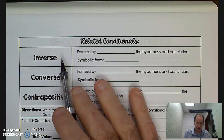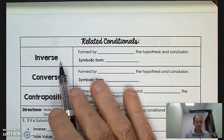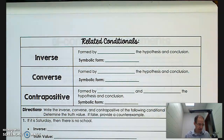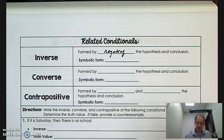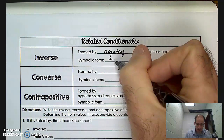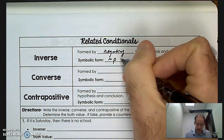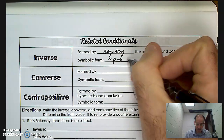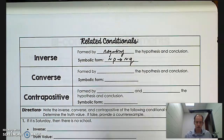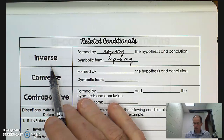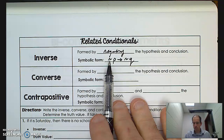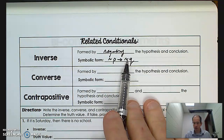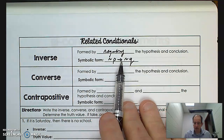One of them is called the inverse. The inverse is formed by negating the hypothesis and the conclusion. So it looks like this: if not P, then not Q. The original conditional statement said if P then Q; now I'm negating both, sticking the tilde in front of P and Q, and I get: if not P, then not Q.